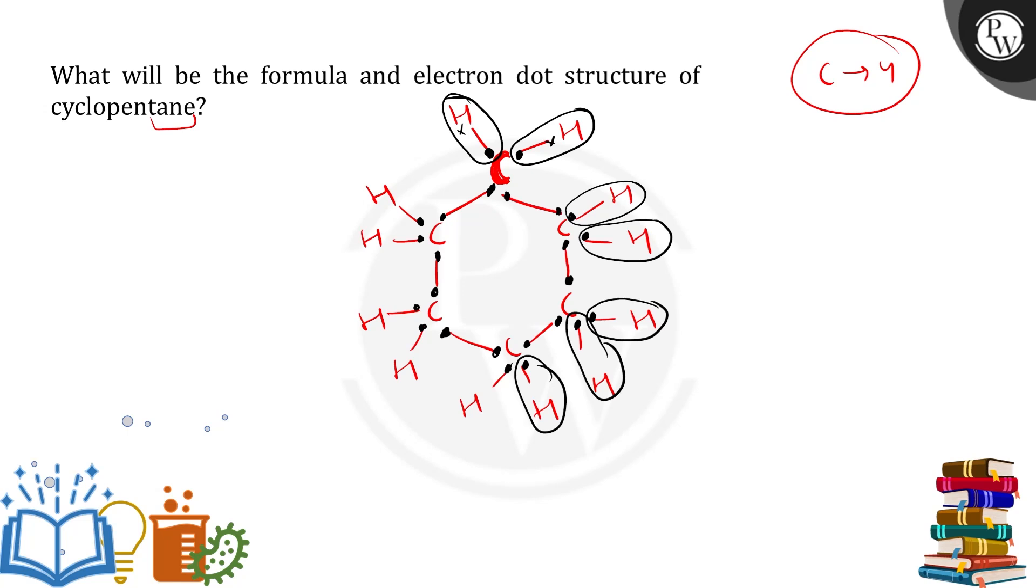Now we take carbon and make carbon's octet: 4, 5, 6, 7, 8 electrons.